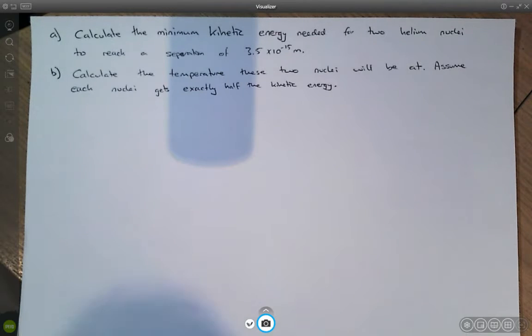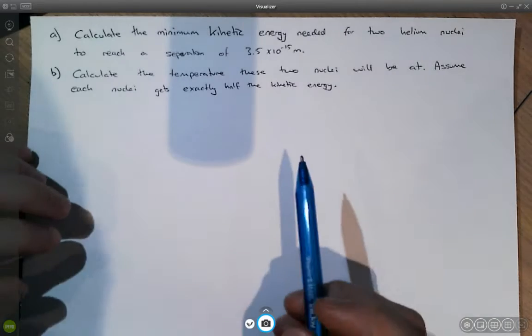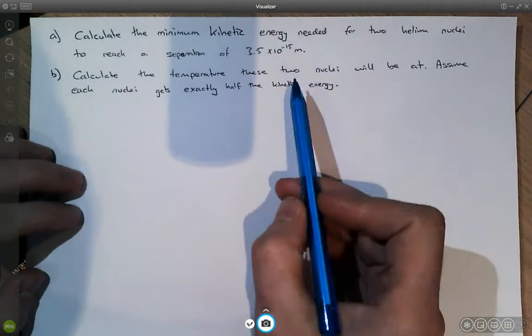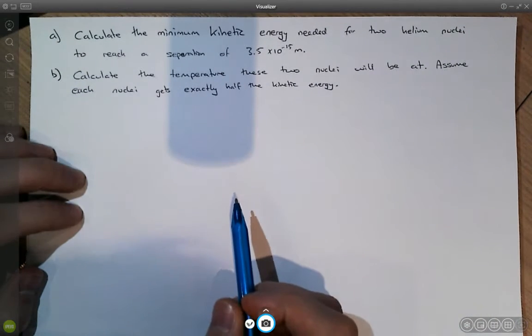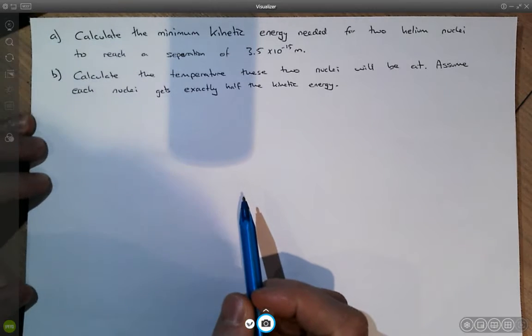In this video we're going to look at a question that comes up all the time in nuclear physics looking at the closest approach of two nuclei or equally the distance between two nuclei when they can undergo fusion. So pause the video now and try both parts of this question.